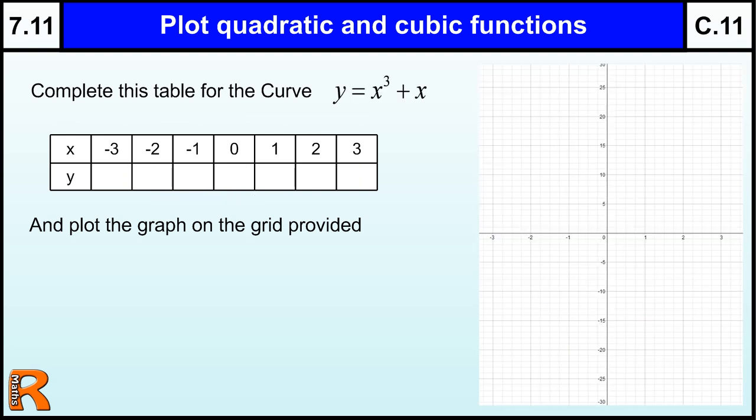OK, so let's have a look at a cubic. So we've got a fairly straightforward cubic, x cubed plus x. So again, I would suggest you work at x cubed first. 3 cubed is 3 times 3 times 3. Be careful not to think that's 9. 3 times 3 is 9. Times 3 is 27. 2 cubed is 2 times 2 times 2, which is 8. And then we've got 1, 0. Now with cubic functions, because you're multiplying the negatives by themselves 3 times, they stay negative. So that's going to be the same as these, but negative values.